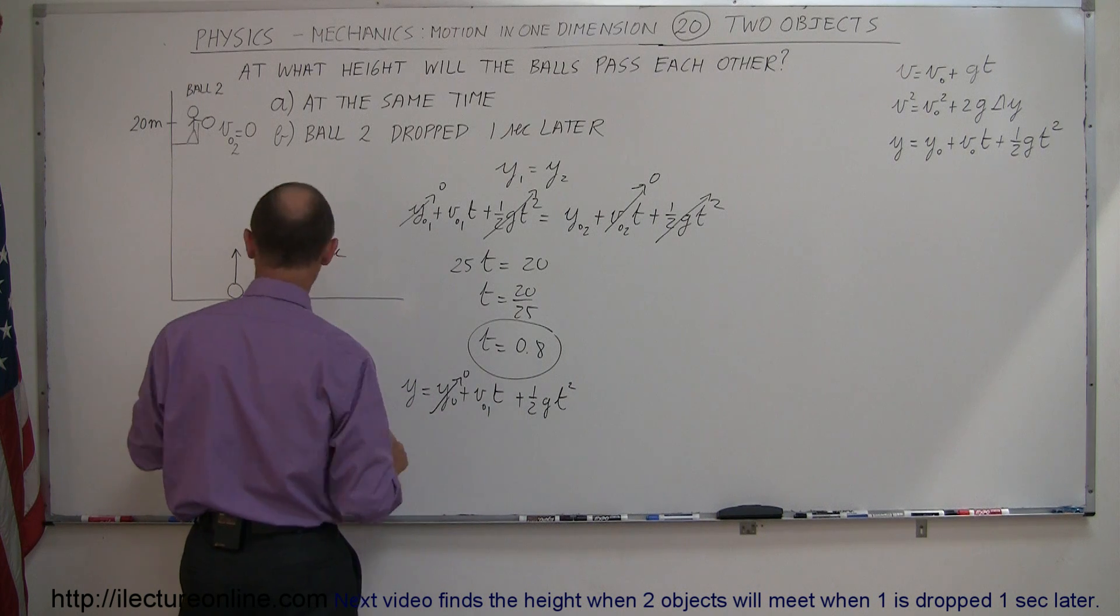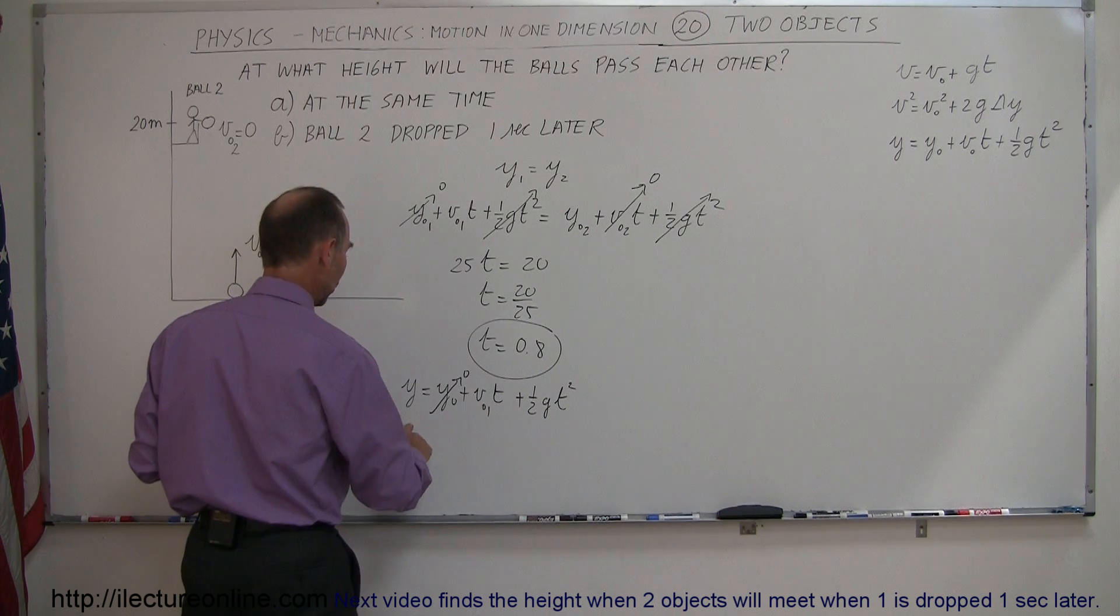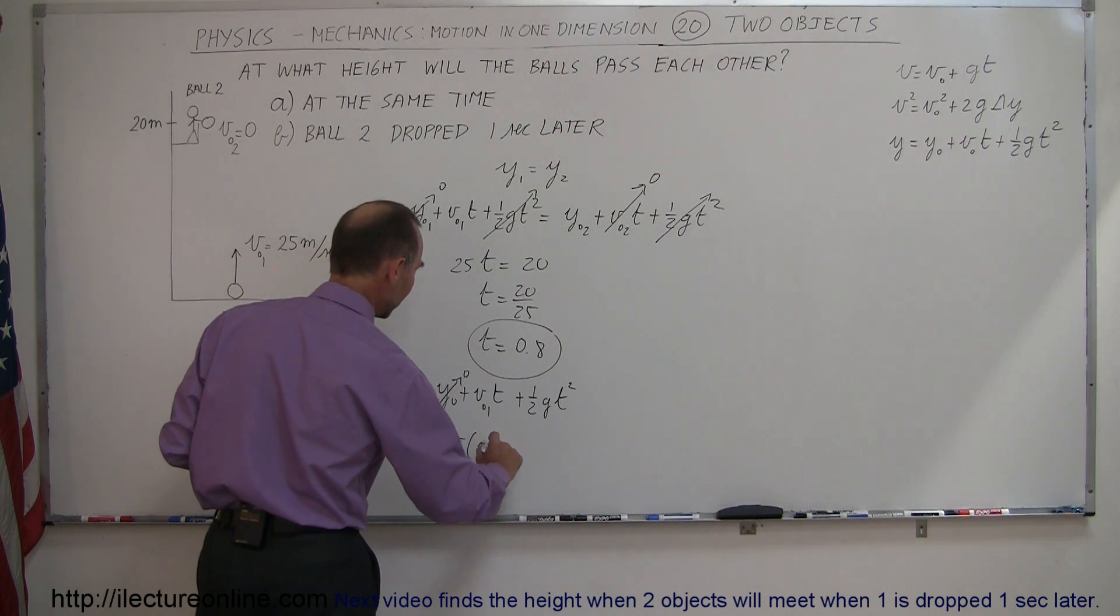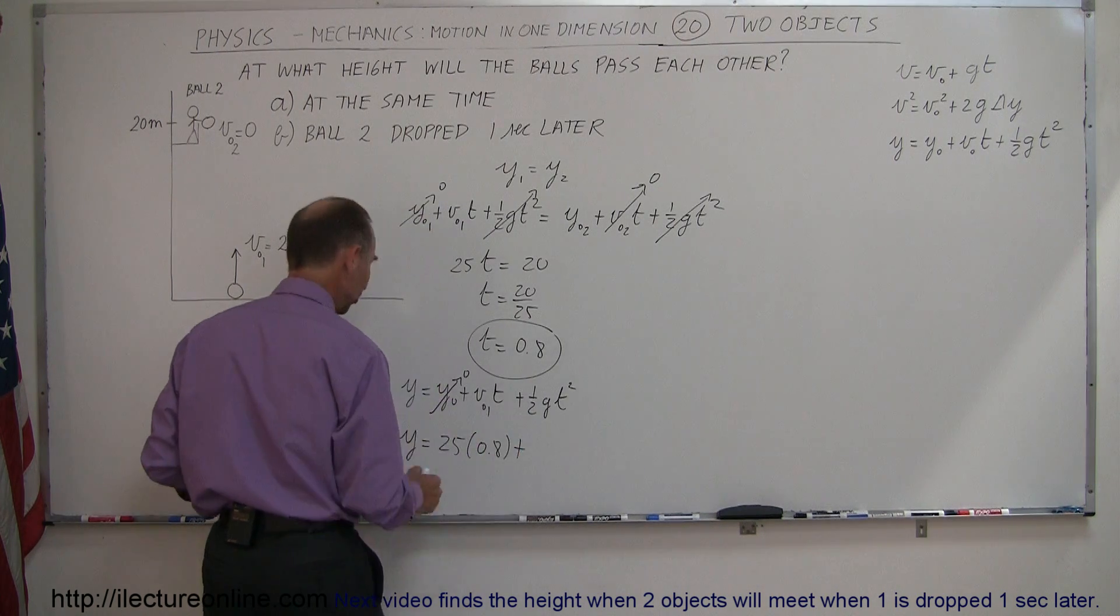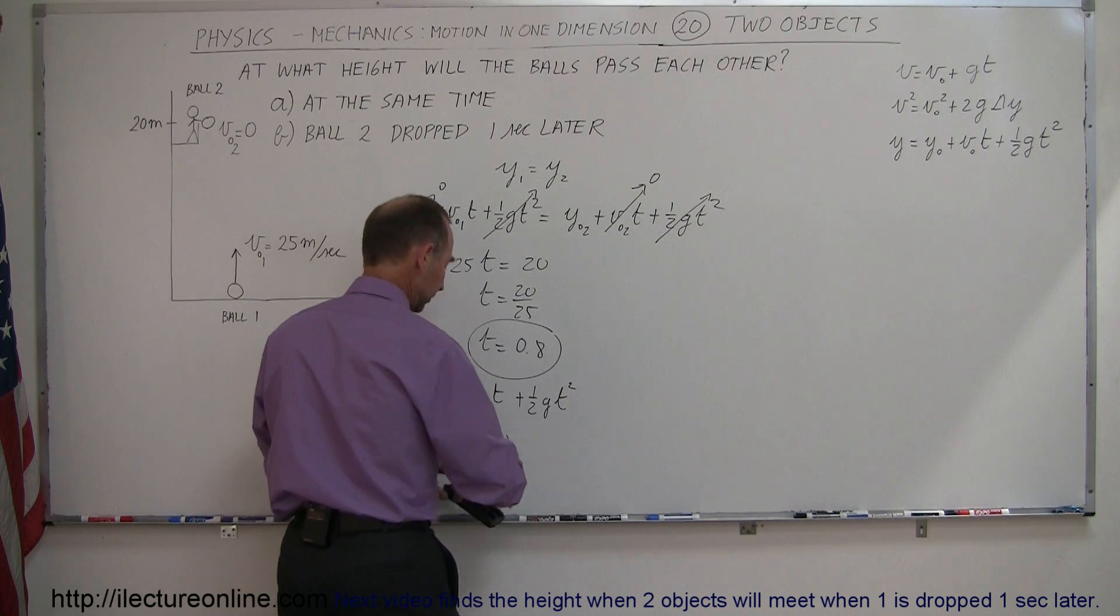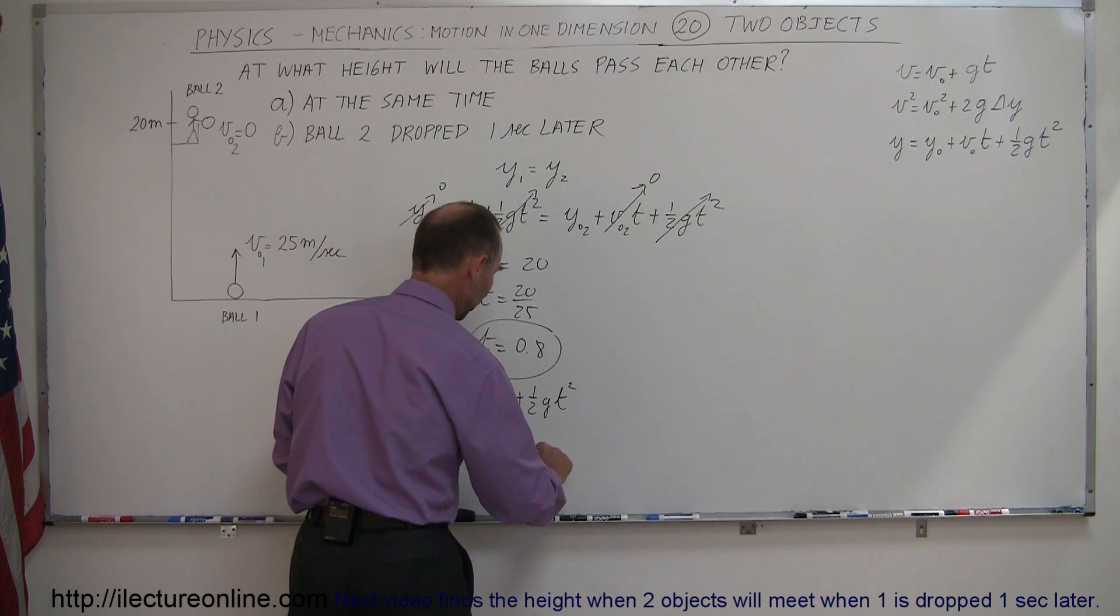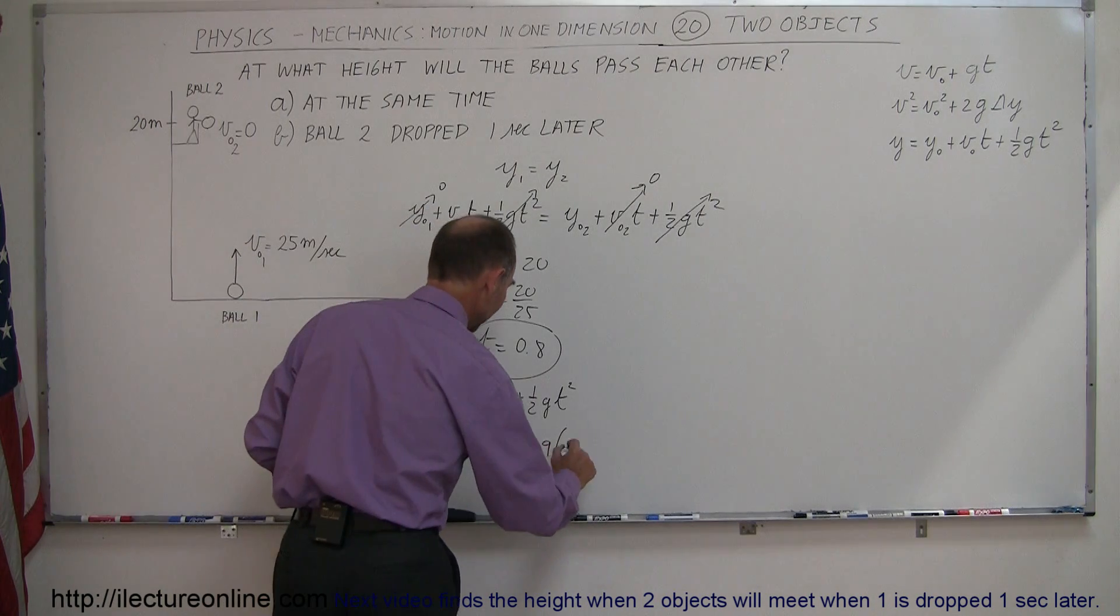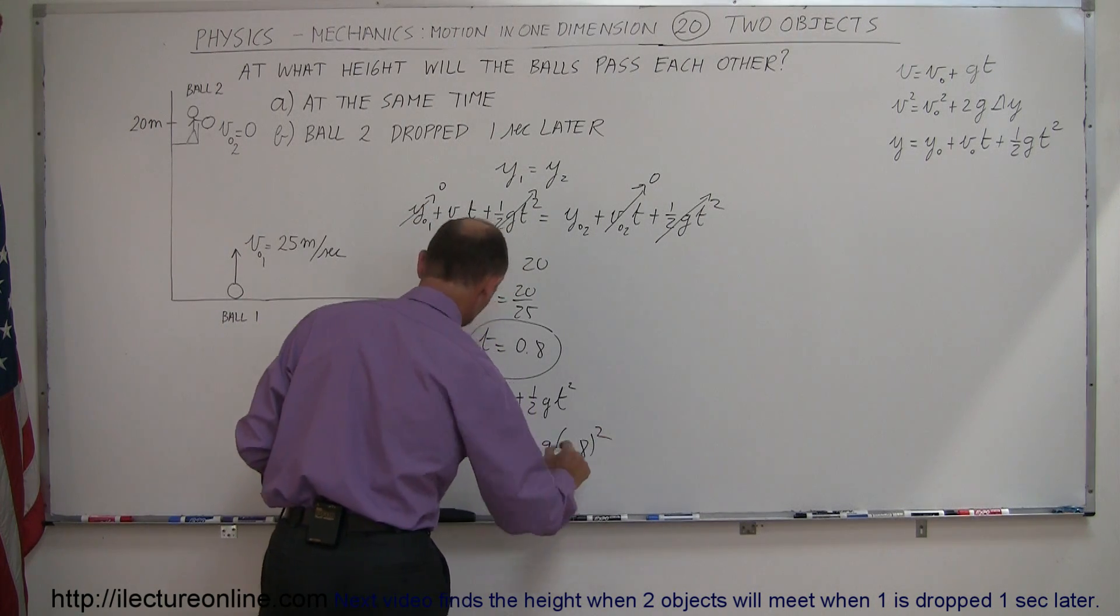of course, y initial for that ball will be zero, because it starts on the ground. So, y will be equal to 25 times 0.8, plus, or actually, g is minus 9.8. So, minus 4.9, because of course, half of 9.8 is 4.9, times 0.8 squared.